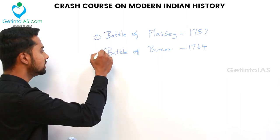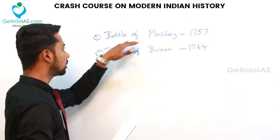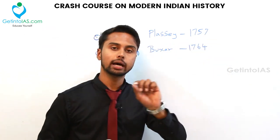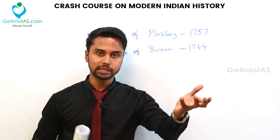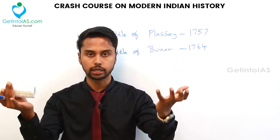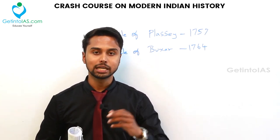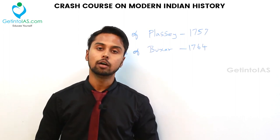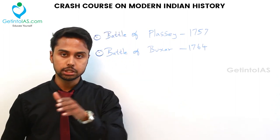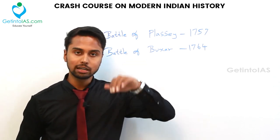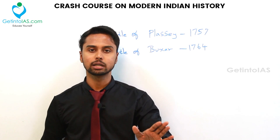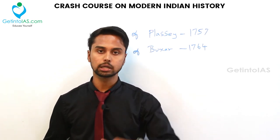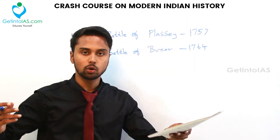Two important battles related to Bengal and Awadh: the Battle of Plassey (1757) and the Battle of Buxar. In the Battle of Plassey, Siraj-ud-Daulah faced Robert Clive. Before the battle, officers of Siraj-ud-Daulah — Manik Chand, Mir Jafar, and Jagat Seth — were bribed by Robert Clive. On the day of battle, it lasted just one to two hours and Siraj-ud-Daulah completely surrendered. The Battle of Plassey ended with the Treaty of Alinagar, by which Mir Jafar was placed as Nawab of Bengal.